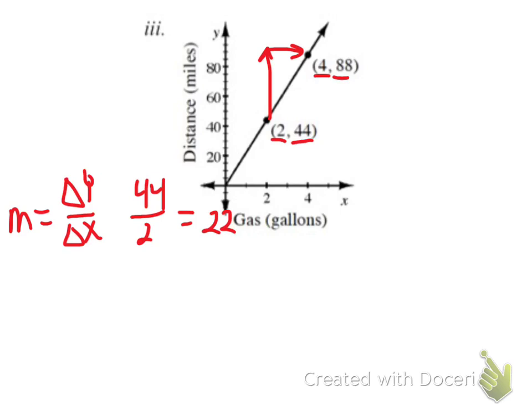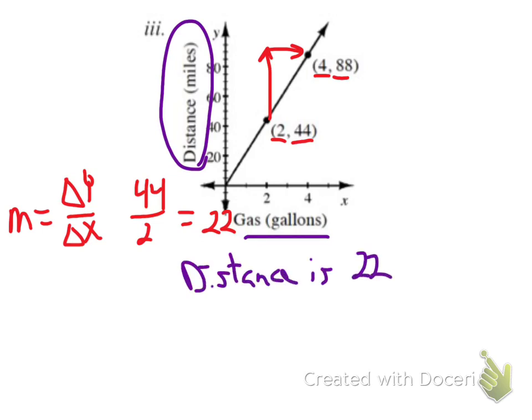So making sense of what this means, the distance in miles is increasing by 22 for every one gallon of gas. It does not specifically state on here if that's how far you're traveling or what. We just know that the distance is 22 miles for every gallon of gas.